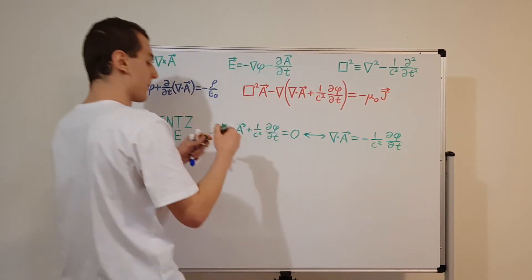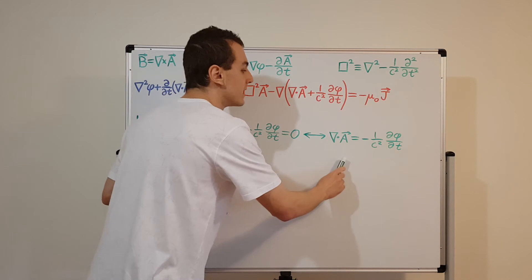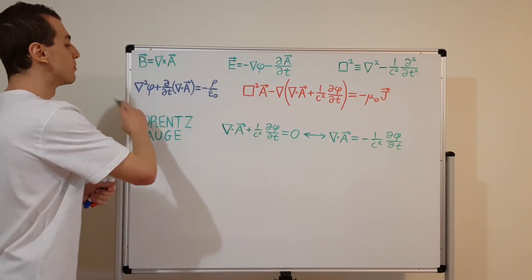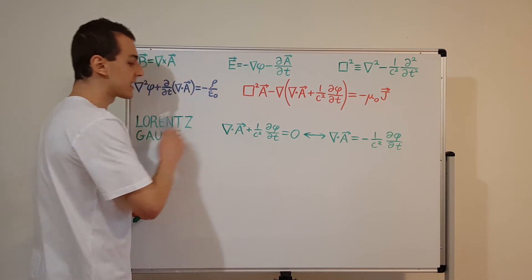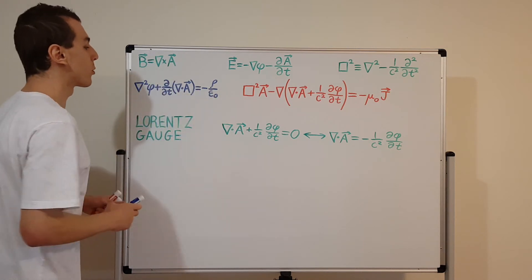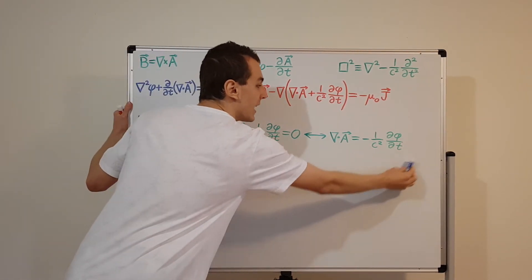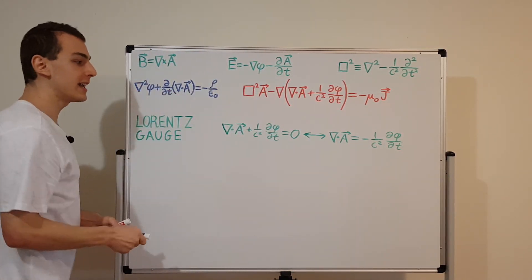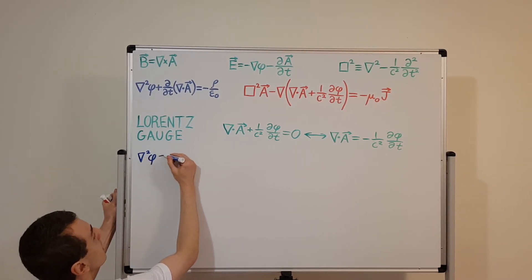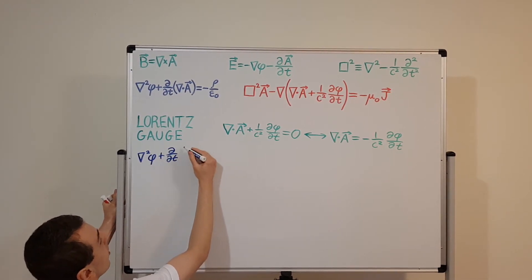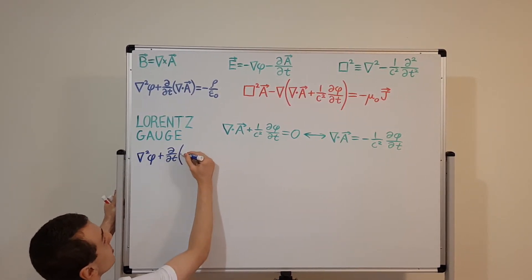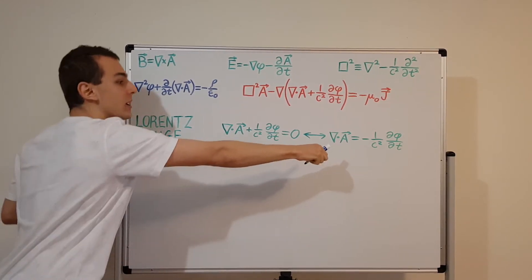This is a partial time derivative, and it's a very important condition. If we impose this condition and ensure it is satisfied, we can eliminate that complicated term. Now let's see what happens to the blue equation. If we impose this condition — choosing A and phi to satisfy it — then the divergence of A equals minus one over c squared times d phi over dt. Substituting that in underneath, we get the Laplacian of phi plus the partial derivative with respect to time acting on that bracket, which gives minus one over c squared times d phi over dt.